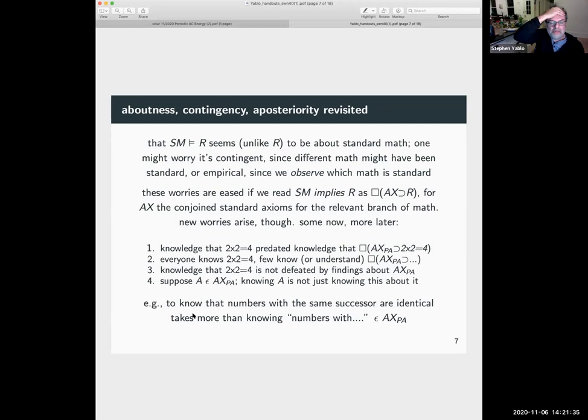So let's suppose that we read, instead of sm implies r, we'll read the thing that you have to know to count as knowing that r in practice as box axioms then r. So here's a couple of new worries that might arise. Obvious one, knowledge that two times two equals four long predated knowledge that necessarily axioms of arithmetic, then two times two is four, I believe. Everybody knows that two times two is four, very few know or even understand the modalized claim about the axioms.